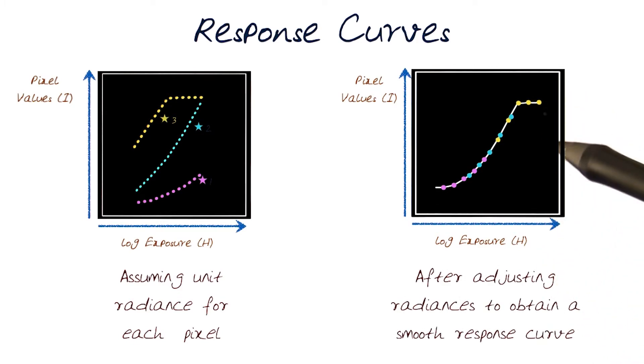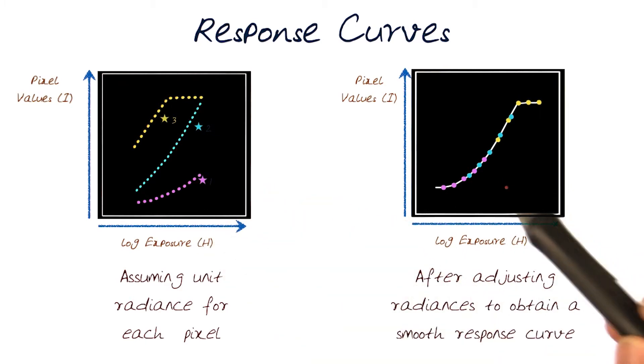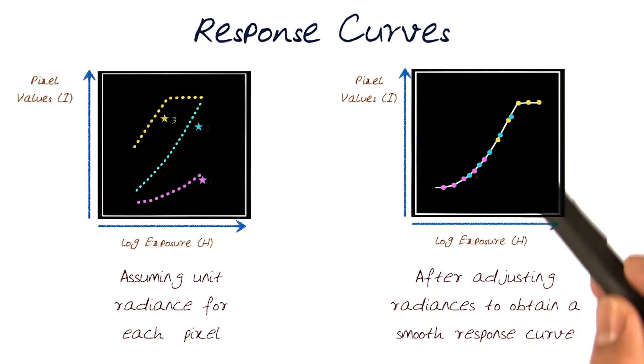And basically what that means is I'm adjusting the radiances to obtain a smooth response curve. So I take all three of them, I basically adjust them around a little bit to create a nice, smooth response curve.